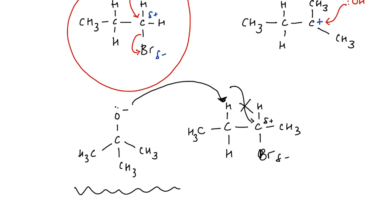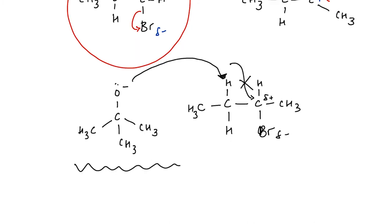The second factor is activation energy. Elimination reactions have a higher activation energy than substitution reactions because in elimination we are breaking two bonds: the C–H bond on the beta carbon and the C–halogen bond. Therefore, high temperatures favour elimination reactions over substitution reactions.